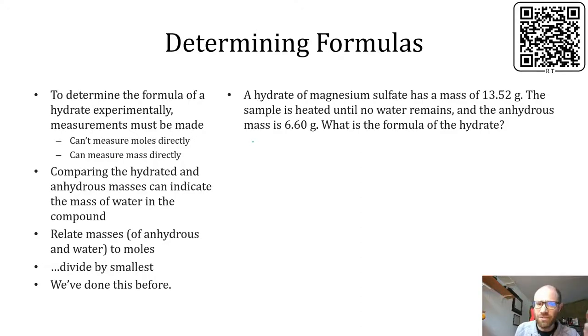We can't measure directly a number of moles with any sort of instrument, but we can measure mass. And I think we know how to relate mass back to moles. And so if you had a scale in that previous example with the copper 2 chloride, or cobalt 2 chloride, sorry, and weighed it before you heated it, and then weighed it after you heated it, you could tell how much water was removed from the crystal. And so then you can take those masses and relate to moles, divide by smallest. This sounds familiar. This is like what we did with empirical formulas. And actually, yeah, that should work. Let's try that.